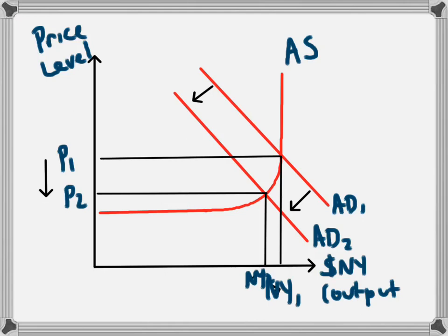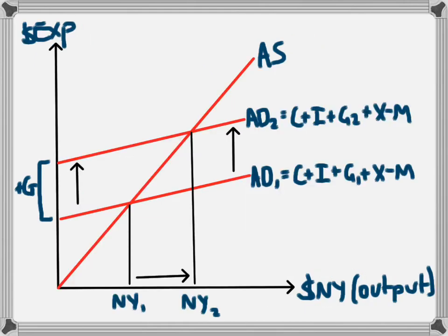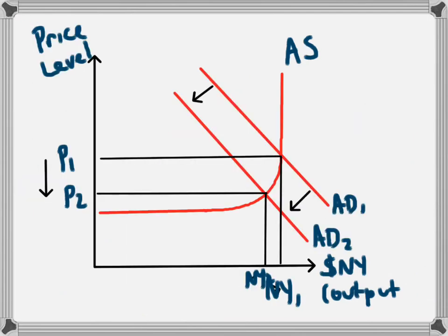So both models can be used to show expansionary and contractionary fiscal policy. But if you wanted to tie in your diagram with the effect of fiscal policy on inflation, this alternative model would be better to use because it does show the price level.